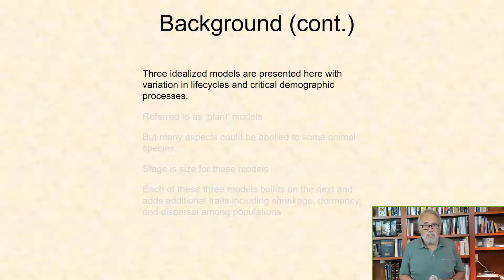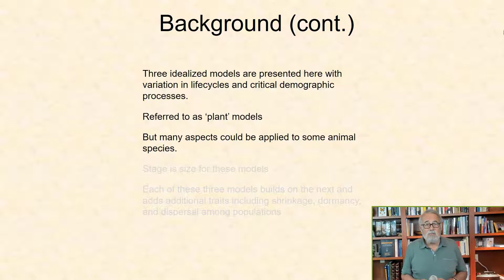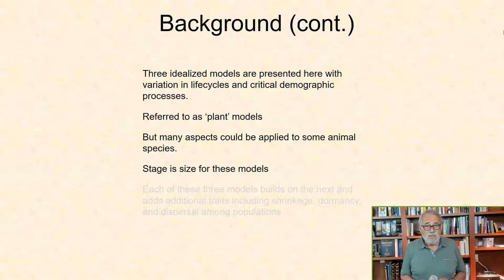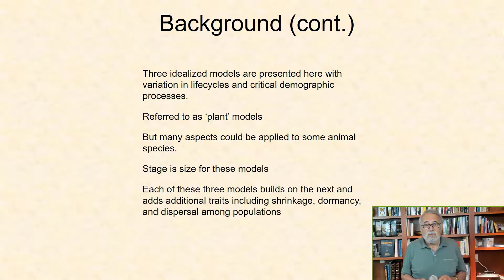Three idealized models are presented here with variation in life cycles and critical demographic processes. These models are referred to as plant models, but many aspects of the structure of these stage models could be applied to some animal species. Stage is size for these models, which for plants may be quantified depending on the species as the number of leaves, size of rosettes, or the diameter at breast height. Each of these three models builds on the next and adds additional traits including shrinkage, dormancy, and dispersal among populations.